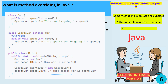The method that's used is determined by the type of the object that calls the method. It's the same name and the same parameters, but because of the inheritance relationship between Car and SportsCar, the method that's called changes depending on the type of object that's calling it.